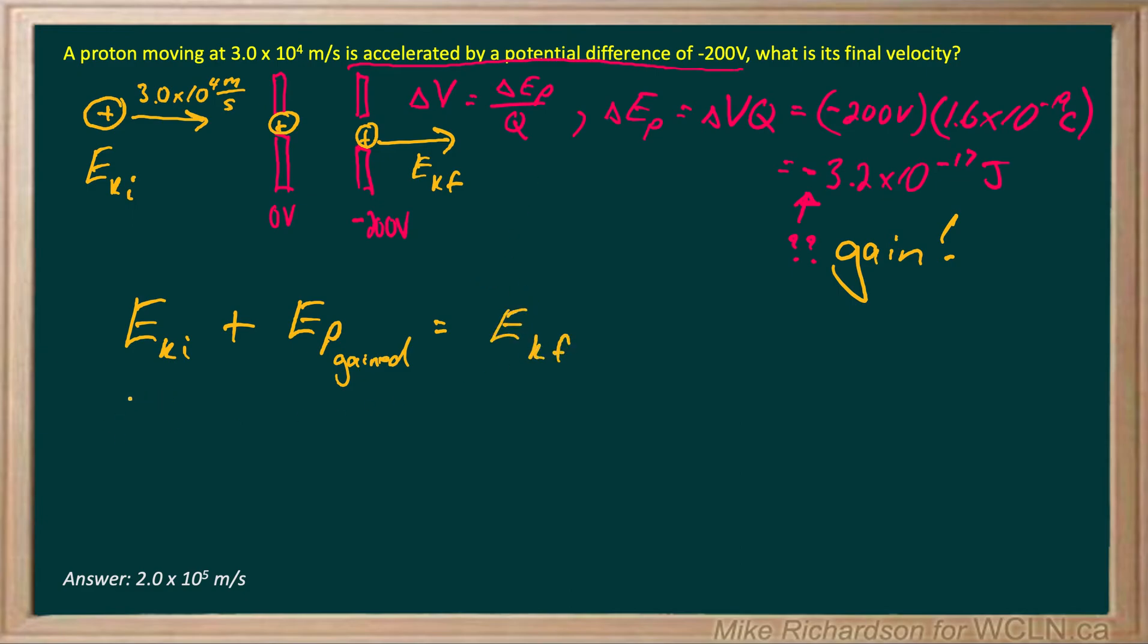So I simply plug in my equations. 1/2 mass of the proton times V initial squared plus, now we're not going to worry about the negative anymore. We know it's gaining energy. I don't want to put negative in there because that means I'm losing energy. 3.2 times 10 to the negative 17 joules equals EK final.